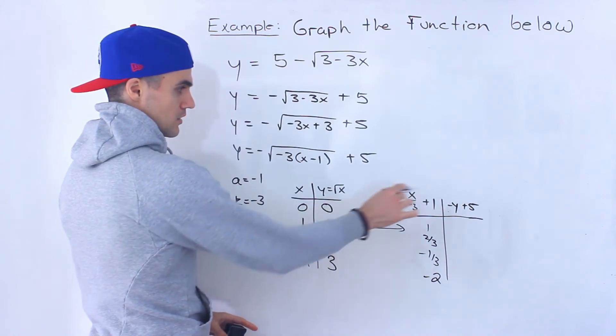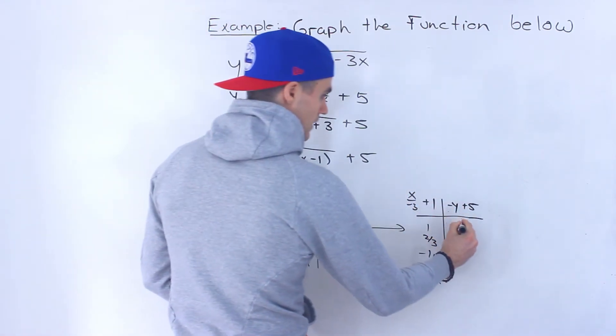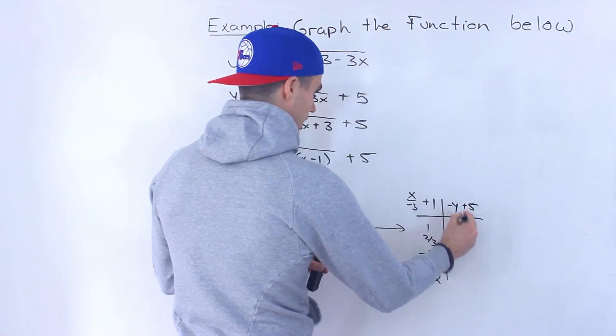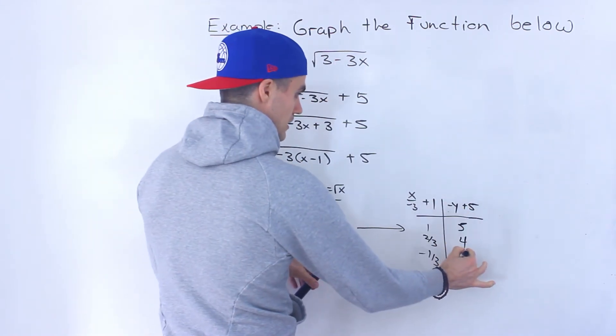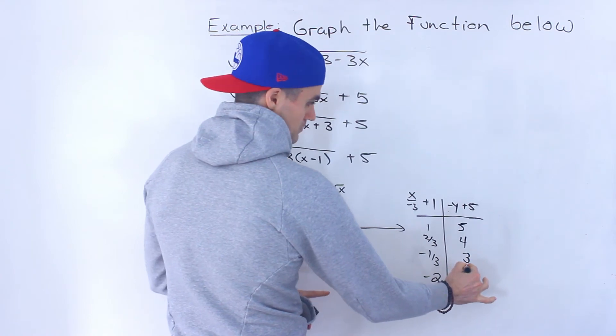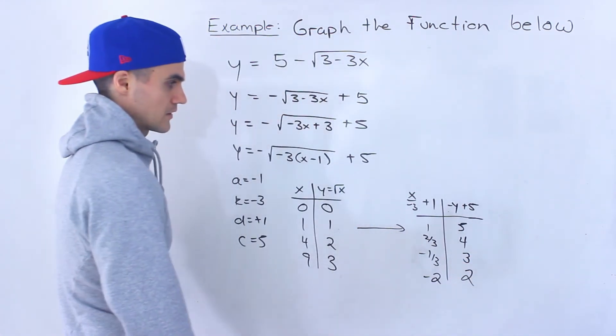And then here, 0 times negative 1 plus 5 would give us 5. 1 times negative 1 would give us 4. This would be 3, and then this would end up just being 2.